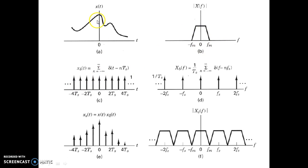For sampling, the idea is very simple: you are multiplying this continuous time signal x(t) with a train of impulses spaced by a time Ts, where Ts is known as the sampling period. Sampling period is the period after which each sample is taken.